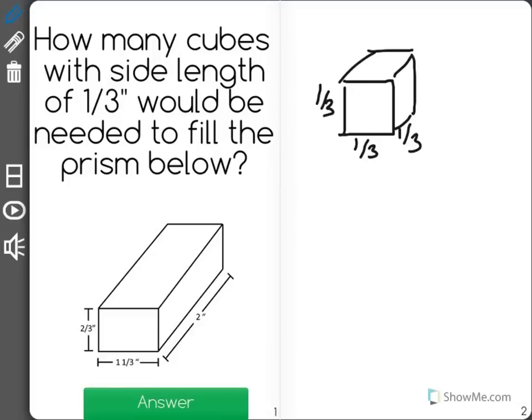First thing we'll do is actually figure out the volume of this cube. So the volume of this cube is going to be one-third times one-third times one-third, which is equal to one-twenty-seventh of an inch cubed.